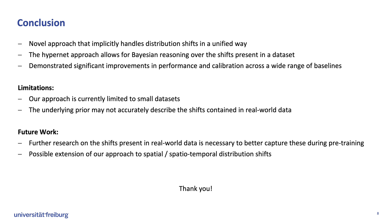Overall, we present a novel approach that handles distribution shifts implicitly in a unified way, whereby our HyperNet approach allows for Bayesian reasoning over the shifts present in a dataset. We demonstrate that this approach outperforms all of our baselines in terms of out-of-distribution performance. As for the limitations, our model is currently limited to small datasets, and our prior may not accurately describe the shifts contained in real-world data. For future work, further research on modeling real-world distribution shifts is necessary to better capture these during pre-training. Our approach can also be extended to introduce spatial or spatiotemporal distribution shifts during pre-training.